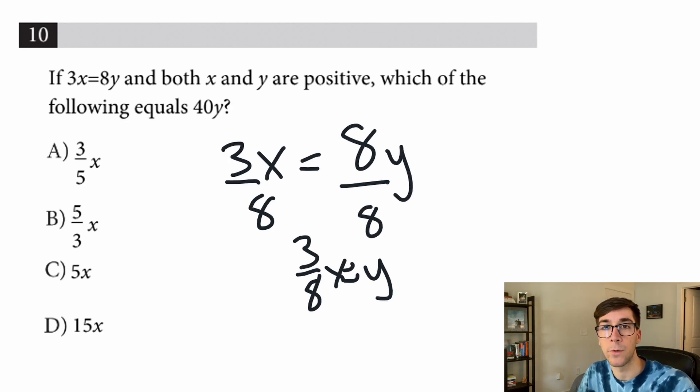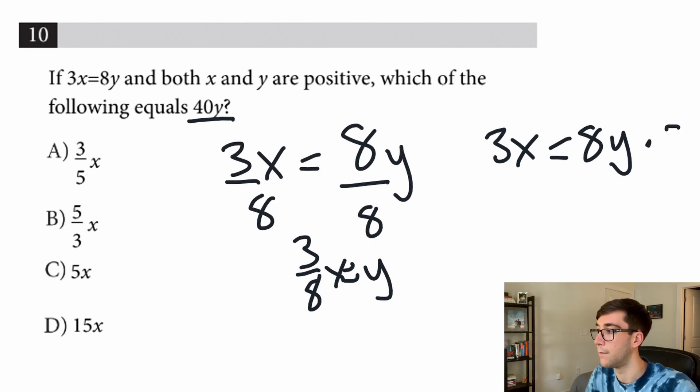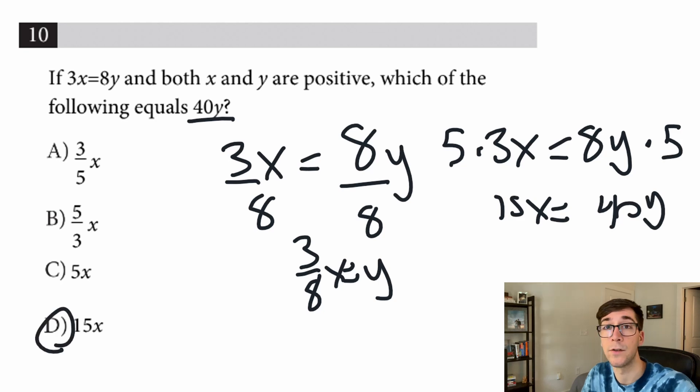But you don't need to do all of this. Here's what you do instead. The problem is asking what equals 40y, so we can immediately make this 40y, multiply by 5, that gets 40y. Do the same thing on this side, times 5 equals 15x, and we know 40y equals 15x. D is our answer.